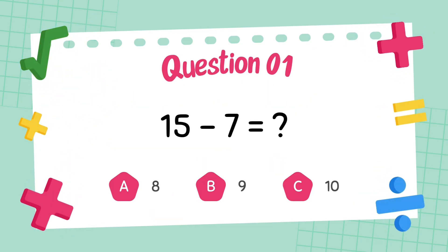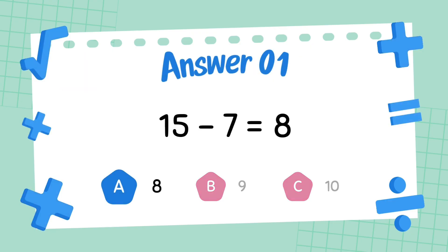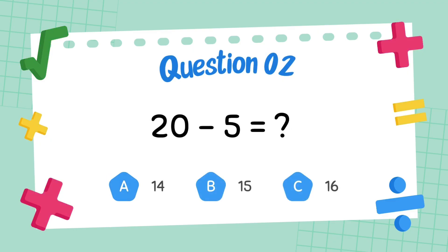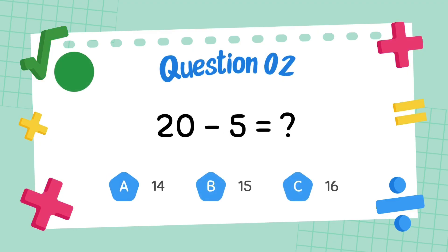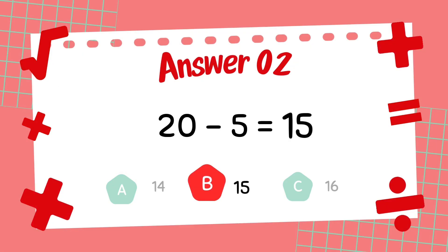What is 15 minus 7? The answer is 8. What is 20 minus 5? The answer is 15.